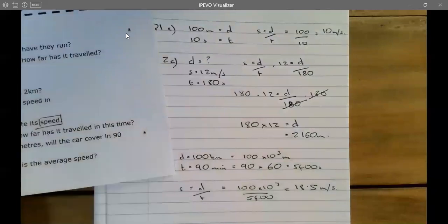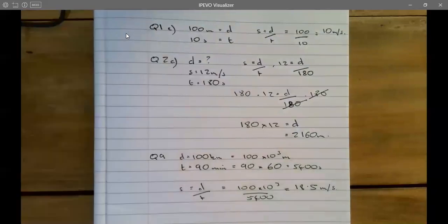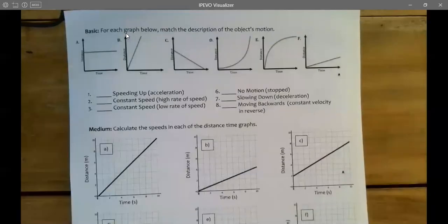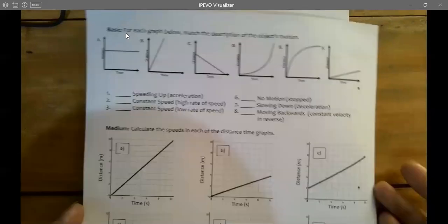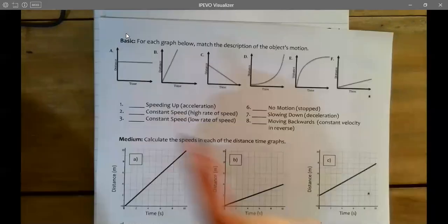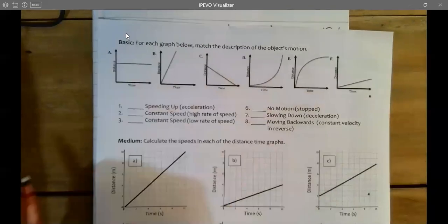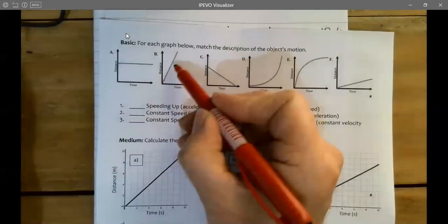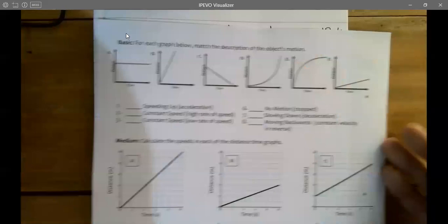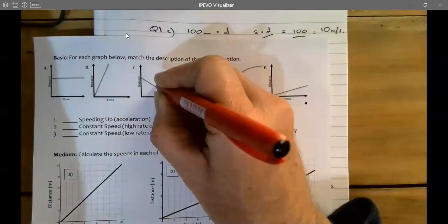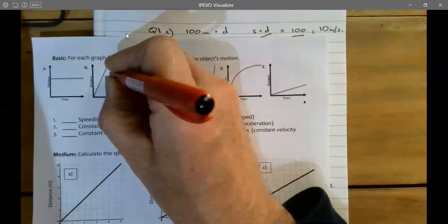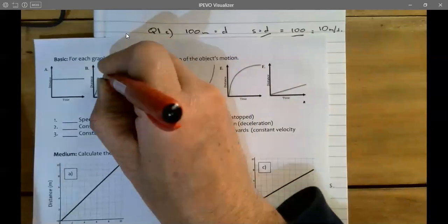Now moving on, we're going to quickly look at the distance-time graphs. We've got here distance-time, and this line here represents the gradient. The gradient here is equal to the change in y over the change in x.